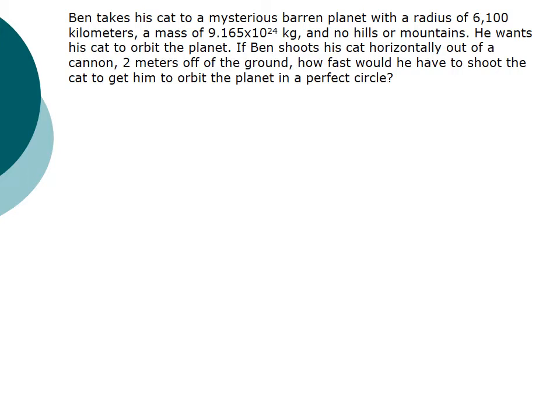So we're going to do this problem here. Let's say Ben takes his cat to a mysterious barren planet. The barren planet has a radius of 6,100 kilometers and a mass of 9.165×10²⁴ kilograms. And this planet magically has no hills, no mountains. So this is just so that the cat can be shot. And we want the cat to orbit all the way around the planet. And the question is, exactly how fast does he need to fire that cat if the cat is only 2 meters high off the ground so that the cat never hits the ground and actually orbits the planet.